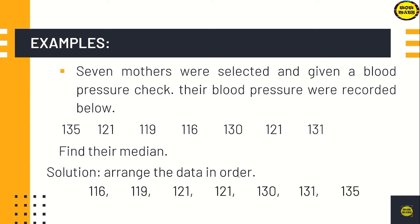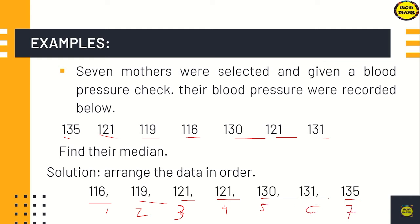For example, 7 mothers were selected and their blood pressures were recorded: 135, 121, 119, 116, 130, 121, and 131. Find their median. First, arrange the data sets from lowest to highest: 116, 119, 121, 121, 130, 131, 135. We have an odd number — 7 elements — so the median score is 121.